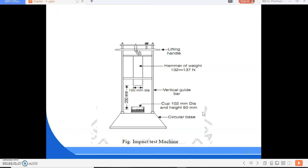This is the aggregate impact test machine. This is the lifting handle, this is hammer of weight 130 to 137 Newton, this is the diameter of the plunger that is 100 mm diameter, vertical guide bar, cup 102 mm diameter and height 50 mm, and this is circular base.